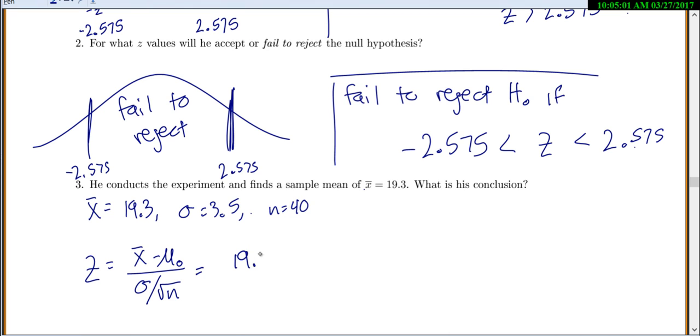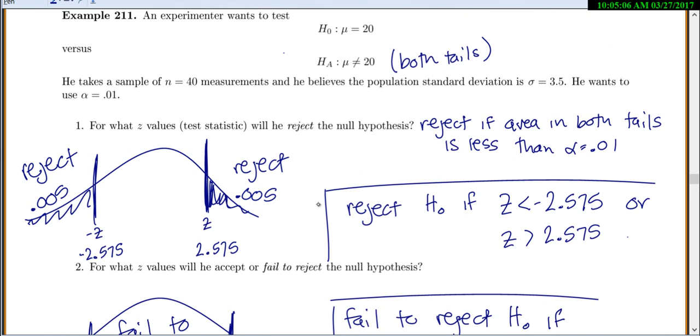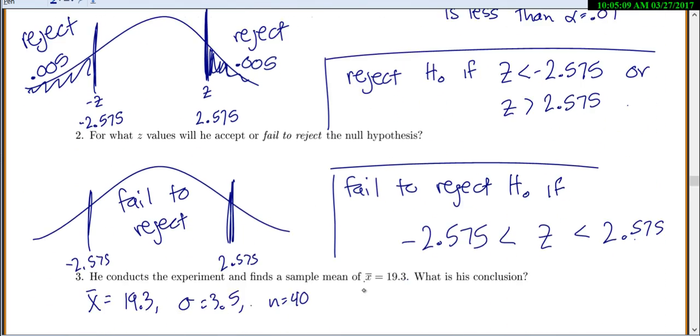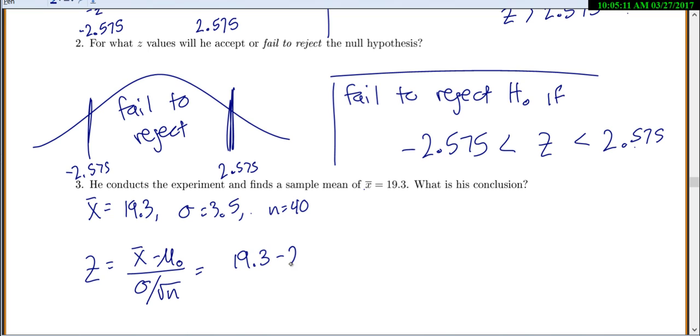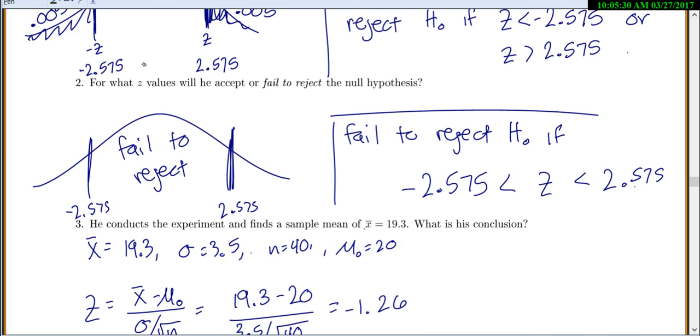So we're going to have 19.3 minus our hypothesized mean. Let's see. We want to know if mu is equal to 20. So our hypothesized mean is 20. Sigma is 3.5 and my square root of n is 40. This gives me negative 1.26. So now all you have to do is you come back up and you say, where did that fall? On my graph, where is negative 1.26? So it turns out negative 1.26 would be about here.